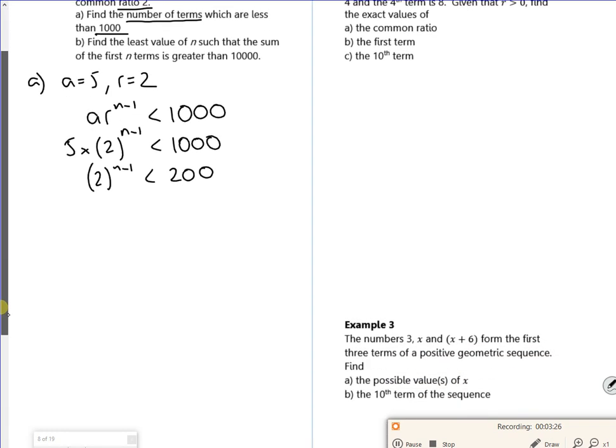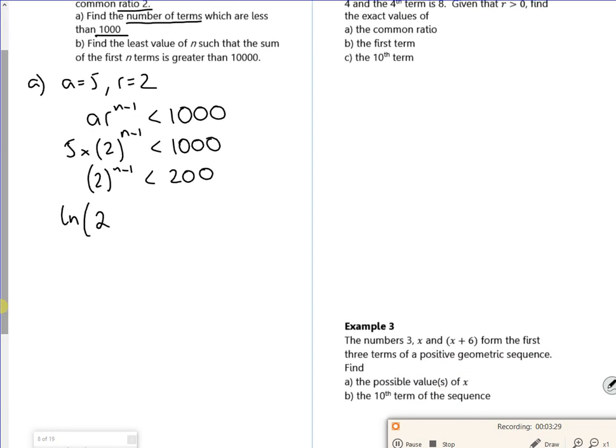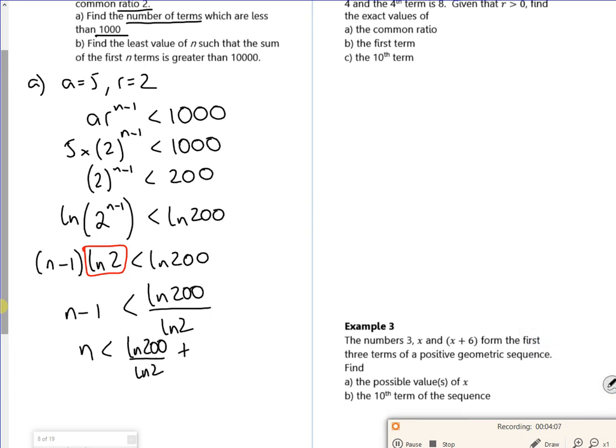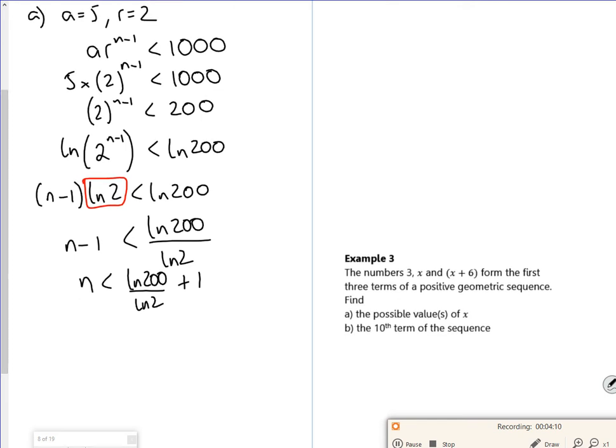So I've got 5 times 2 to the power of n minus 1 is less than 1000, so 2 to the power of n minus 1 is less than 200. Now if I take logs of both sides, we have ln of 2 to the n minus 1 is less than ln 200. Take the power out, n minus 1 ln 2 is less than ln 200. Divide through by ln 2.